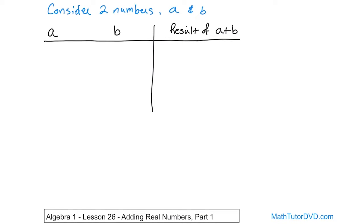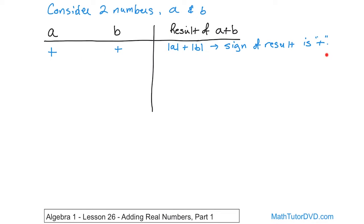Let's take the easiest case first. What is going to happen if A is positive and B is positive? These are the problems that you've been working all of your life — 3 plus 7, 7 plus 9, things like that. What you do is basically add the absolute value of A and the absolute value of B, which means, since they're both positive, you're just going to add A plus B. The sign of the result is always going to be positive, because if you add 3 plus 4, you're always going to get positive 7. So if you add positive to positive, you always get a positive answer.